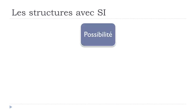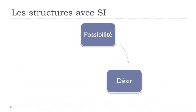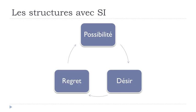The first option we'll have is if we want to express LA POSSIBILITÉ. The second one, LE DÉSIR, and the last one, LE REGRET. So: POSSIBILITÉ — POSSIBILITY, DÉSIR — DESIRE, and REGRET — REGRET. And we'll start with LA POSSIBILITÉ.